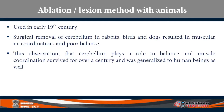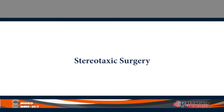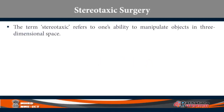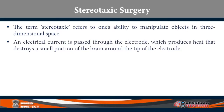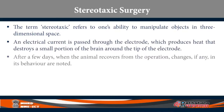After ablation experiments, they did something called stereotaxic surgery. The term stereotaxic refers to one's ability to manipulate objects in three-dimensional space. An electrical current is passed through an electrode, which produces heat that destroys a small portion of the brain around the tip of the electrode. After the animal recovers from the operation, they observe if there are any changes in behavior. By comparing the animal's behavior before and after the surgery, and having destroyed a specific area, they tried to say that area is responsible for the function which is now gone — that is stereotaxic surgery.